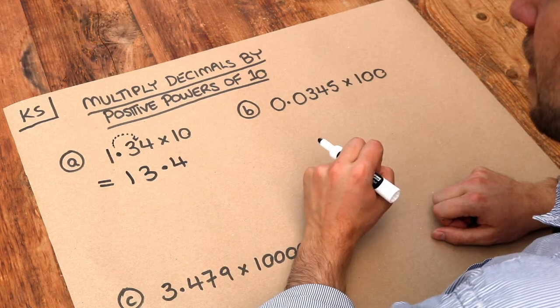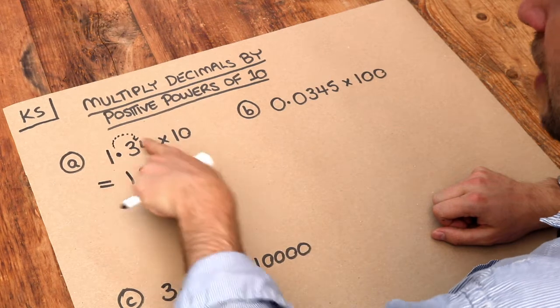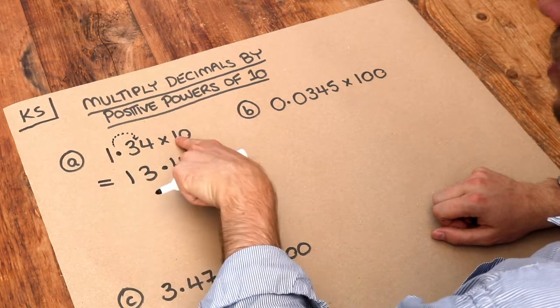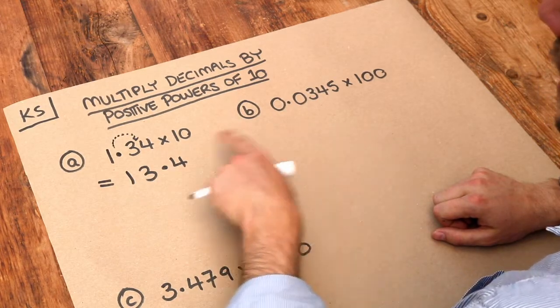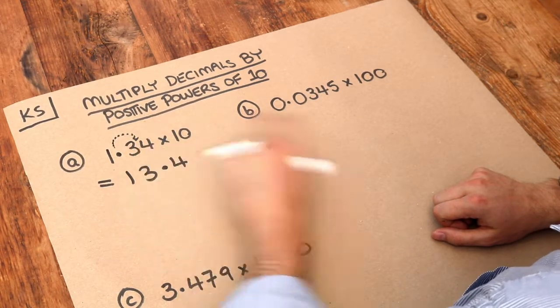And just use your common sense, that feels about right, because this number is approximately one, when we times it by 10, one times 10 is 10, and that's approximately 10. So we can see that the number is getting bigger when we move the decimal point to the right.